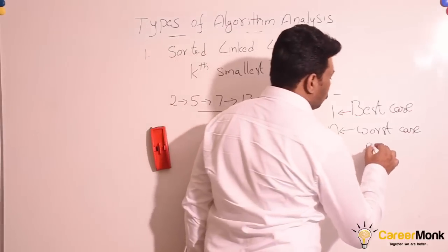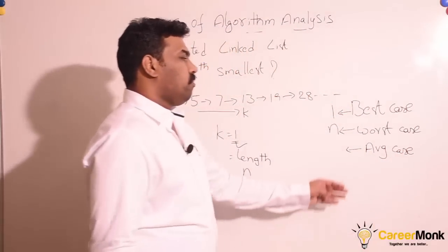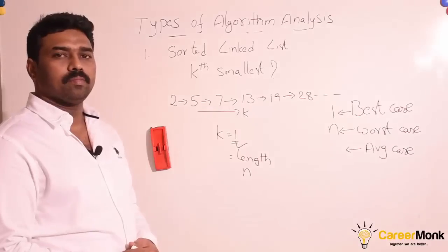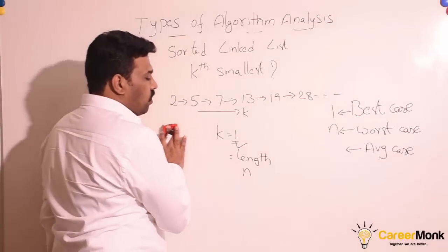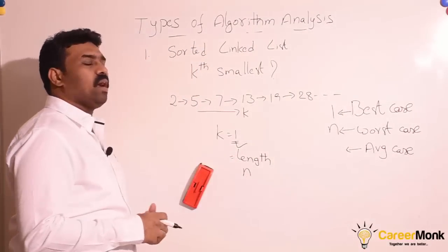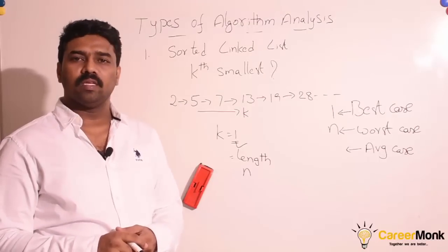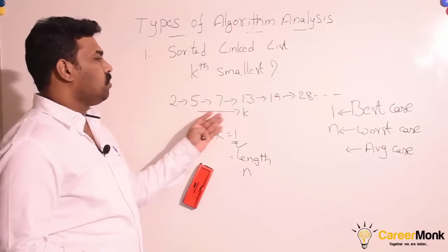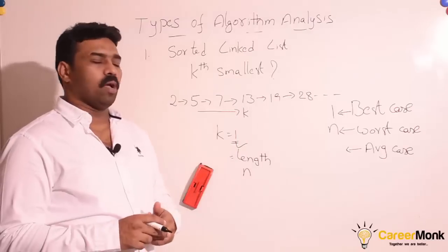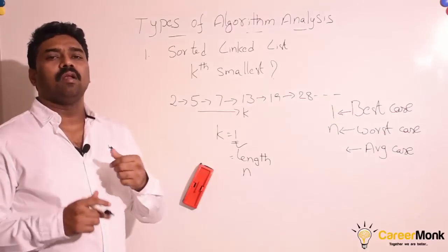Now let us go to the average case. From the definition of average case, we need to find the input for which the algorithm consumes average memory and CPU. For k equal to 1 we get the best case, and for k equal to n we get the worst case. But how do we define the average case? Can we say k equal to n/2 gives the average case? We cannot guarantee that — k can be 2, n/2, n/2 plus 1, or anything. Since we cannot guess the k value for the average case, we need to take all possible inputs and consider all running times.